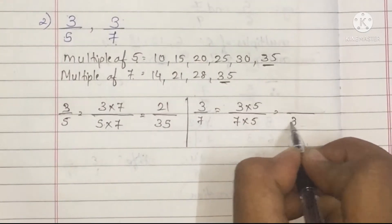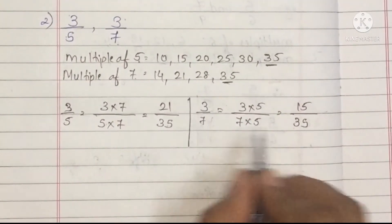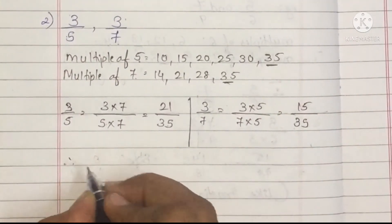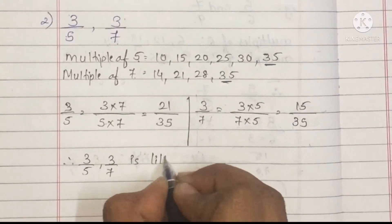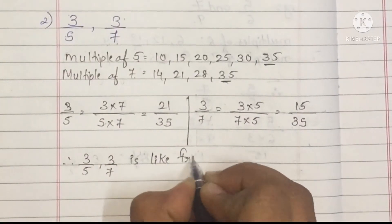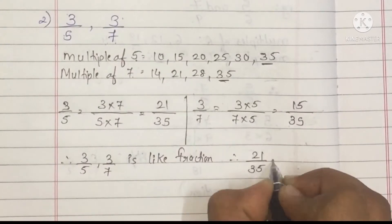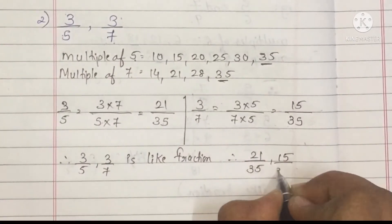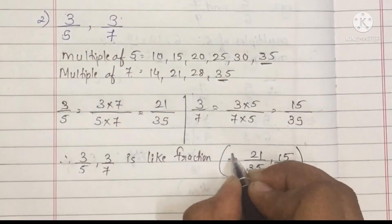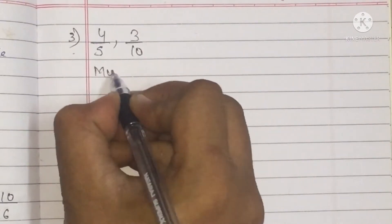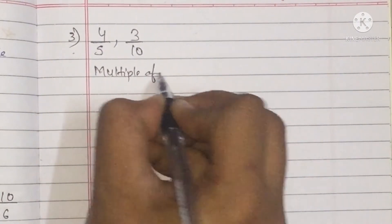For 3 upon 7, we multiply by 5, where 3 fives are 15 and 7 fives are 35. So 3 upon 5 and 3 upon 7 become like fractions: 21 upon 35 and 15 upon 35.